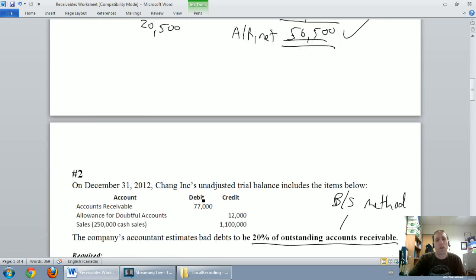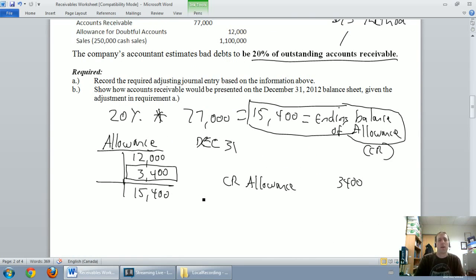Debit bad debt expense, credit the allowance for doubtful accounts. I'm getting lazy and just calling it the allowance, but you may need to write out the whole spiel there. I put in bad debt expense. Bad debt expense is $3,400. So we've got a good journal entry again. Debit bad debt expense, credit the allowance, $3,400.